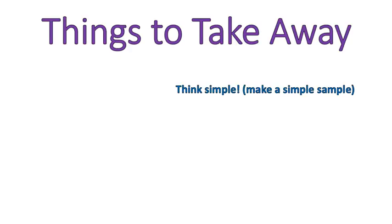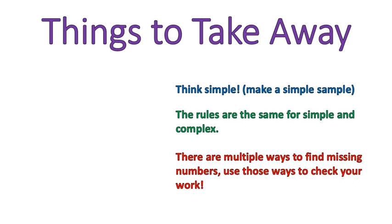Some things to take away. One, think simple. Make a simple sample so that you can see exactly what you're doing. I encourage you to do that and know that the patterns you do with the easier work will continue on to the work that you do in the second one. Second, that the rules are the same for simple and complex and there are lots of ways to find the missing numbers. Use those different ways to your advantage. Use them to check your work as you move forward. I hope that lesson was helpful for you. Have a wonderful day.